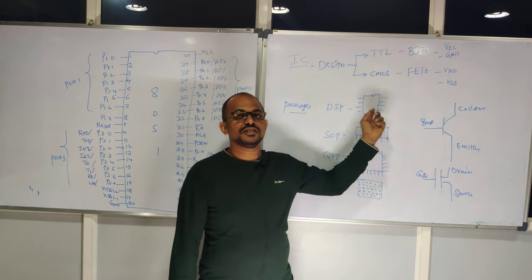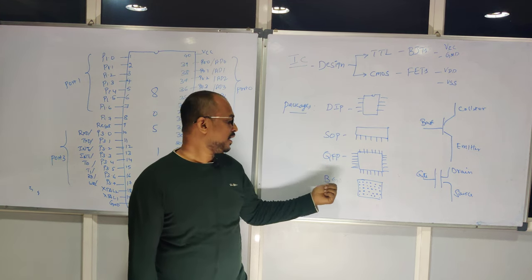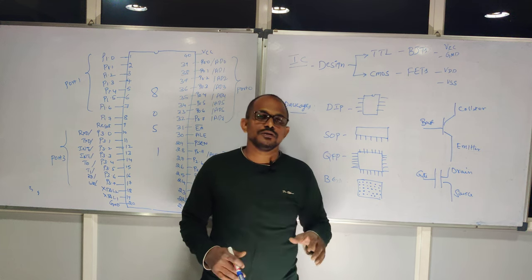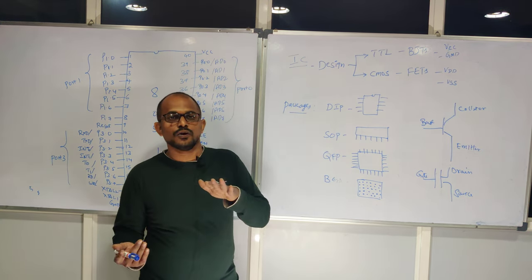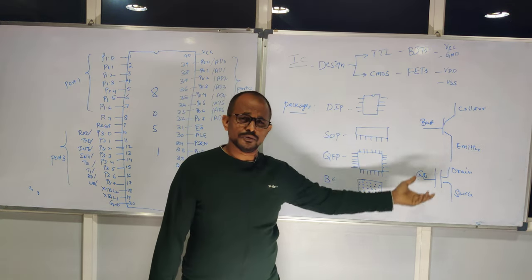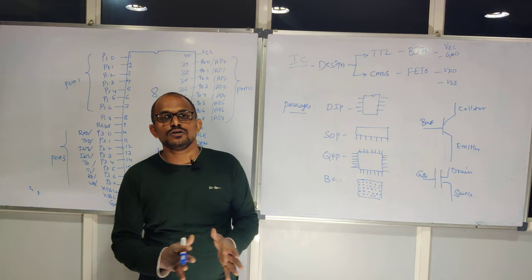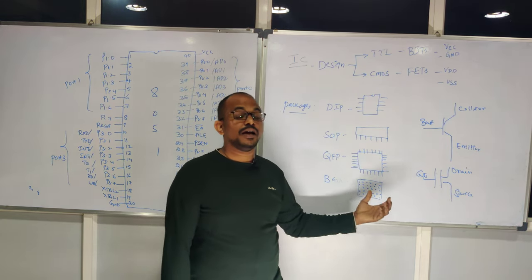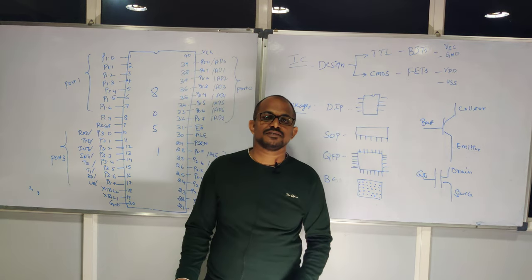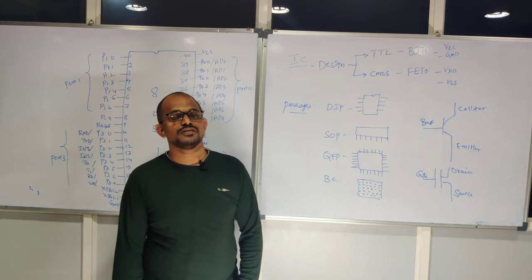At the student level you find DIP and SOP packages, but at the industry or production level you find QFP or BGA packages. BGA stands for ball grid array, and in this package the pins are only on the bottom of the device — like a processor in a motherboard. Package also affects cost: DIP packages have low cost, QFP packages are more expensive than DIP, and BGA packages are even more expensive than QFP. The choice of package depends on the application and cost requirements.